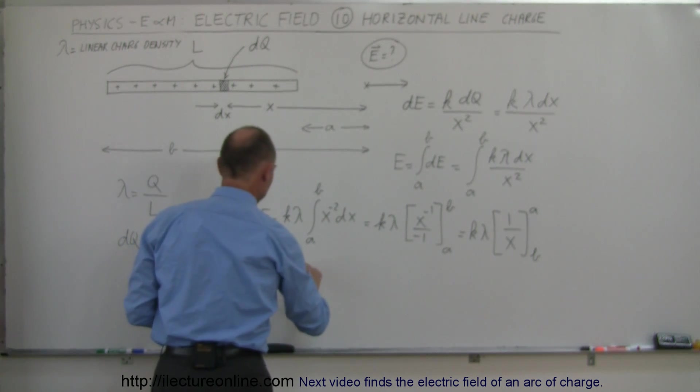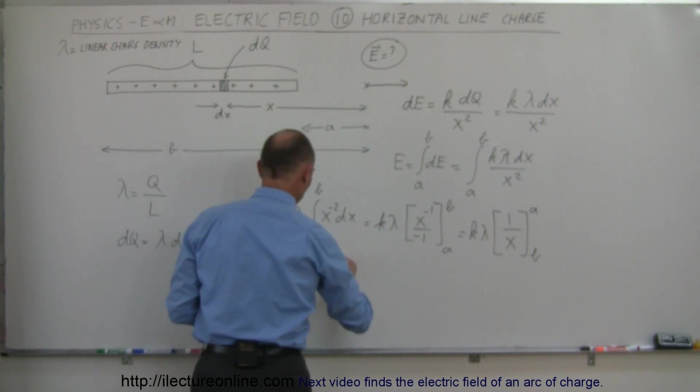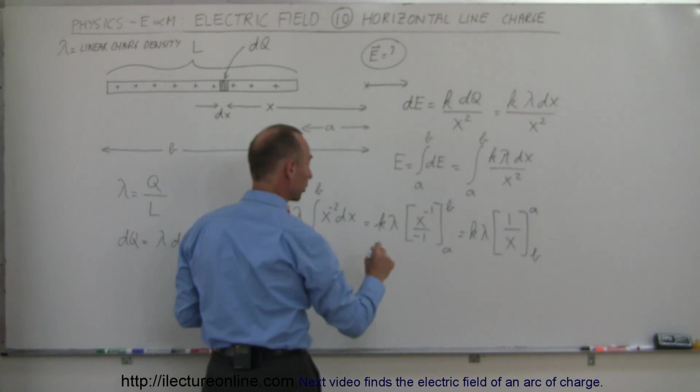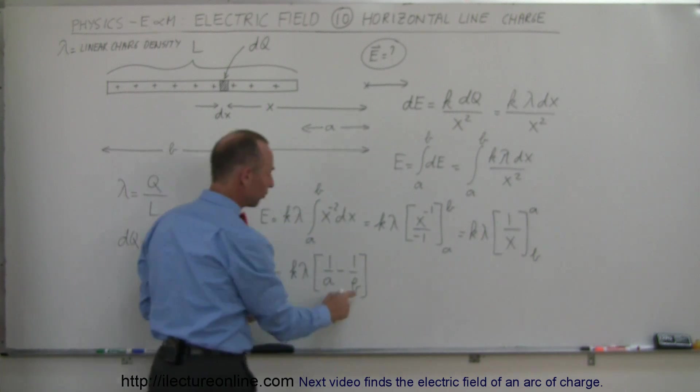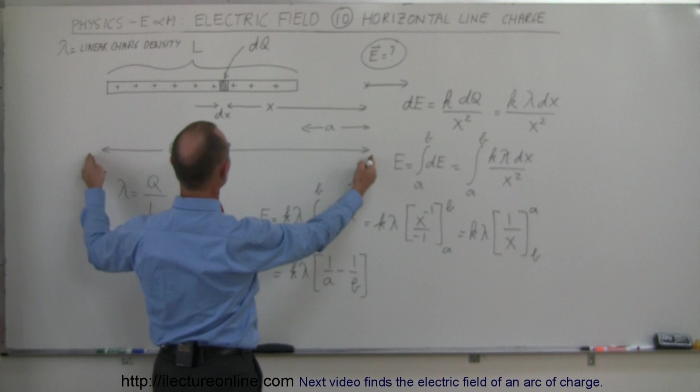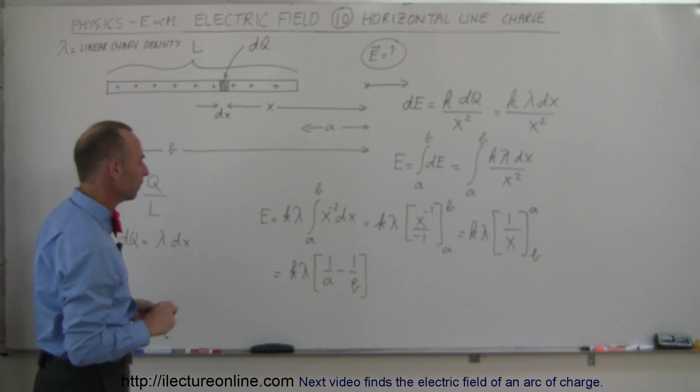So this is equal to K times lambda, and when we plug in the upper limit, we get 1 over A minus when we plug in the lower limit, we get 1 over B. Now, that makes sense because B is bigger than A. You can see B is bigger than A, and so 1 over A would be a bigger number than 1 over B, and so therefore you get a positive result, so that looks good.